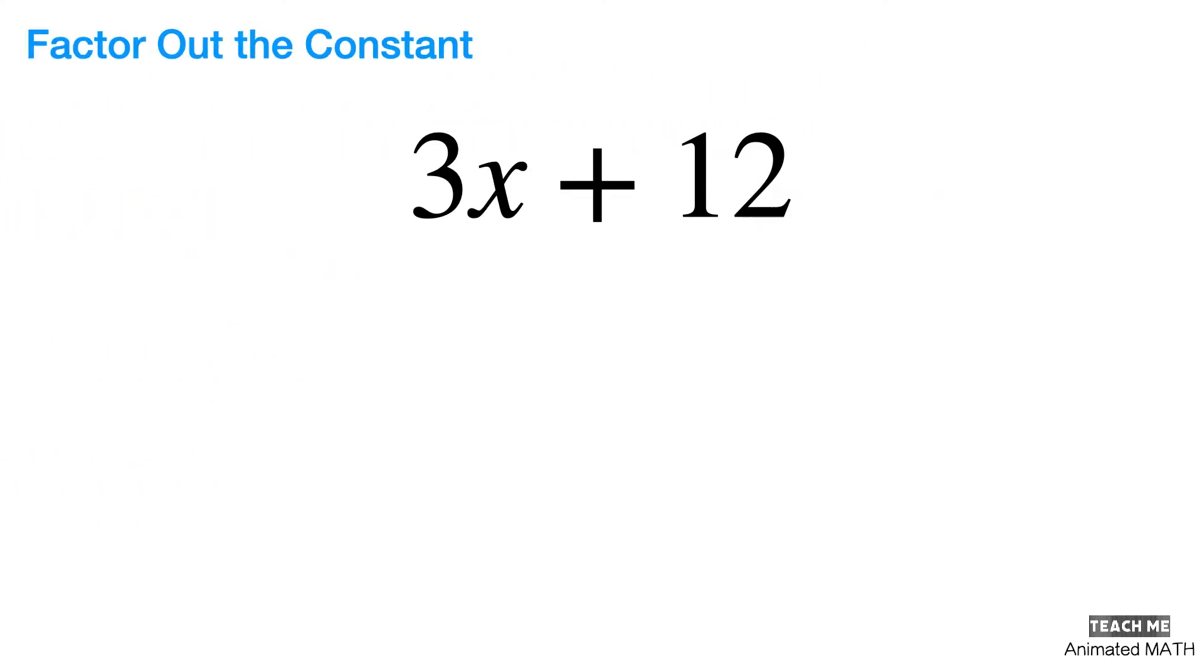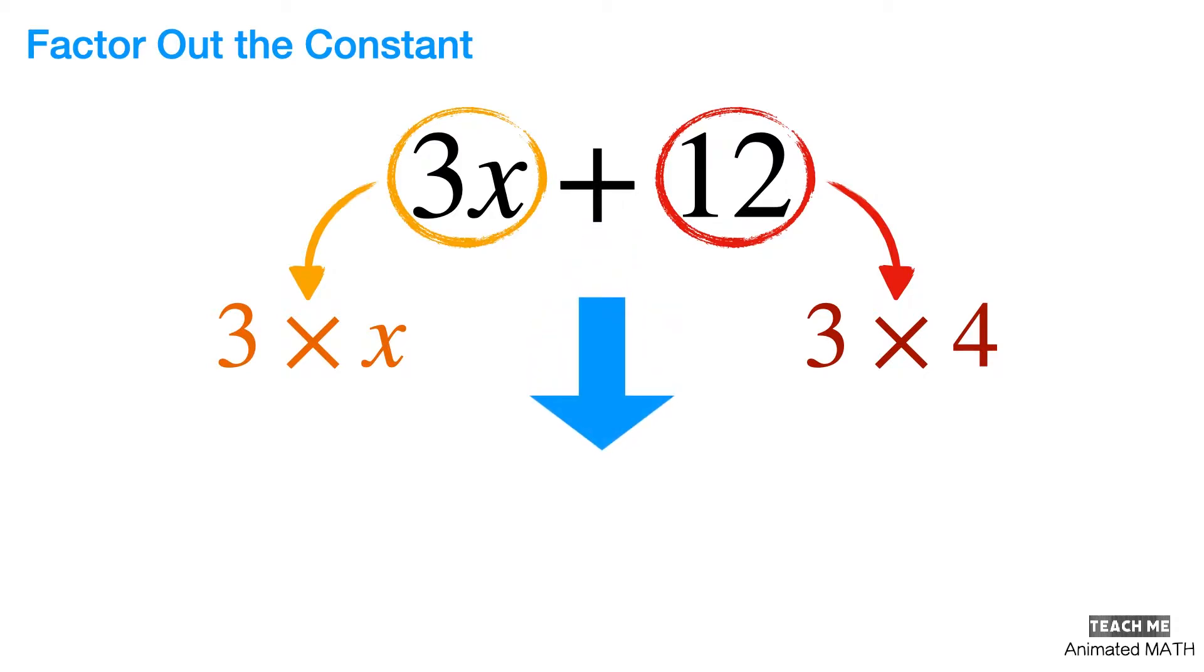As an example, let's try factoring this simple expression. Both 3x and 12 have a common factor of 3. 3x is 3 times x, 12 is 3 times 4. Because we identified this common factor, we can now rewrite the whole expression. The expanded polynomial 3x plus 12 has been factored into 3 and x plus 4.